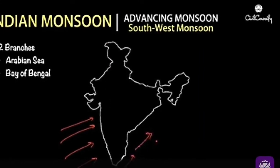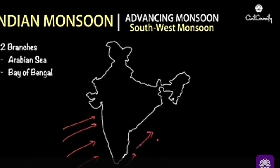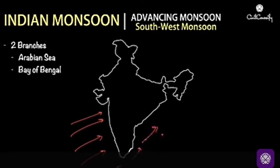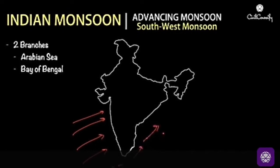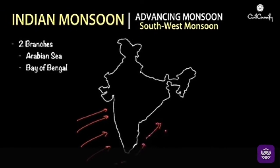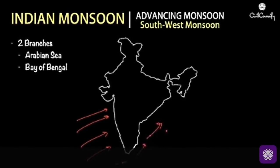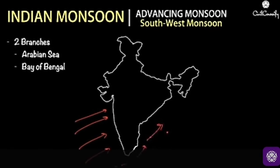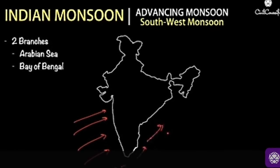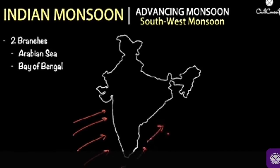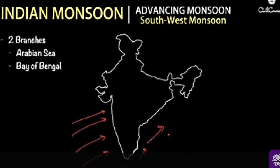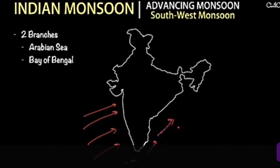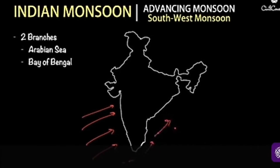The very first thing we must remember about advancing monsoon is that there are two branches: the Arabian Sea branch and the Bay of Bengal branch. The duration of the monsoon is between 100 to 120 days. It begins from early June and continues till mid-September.